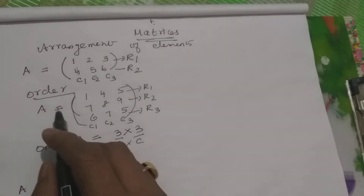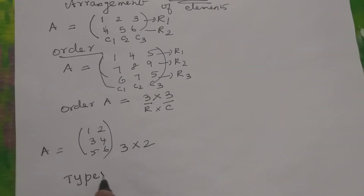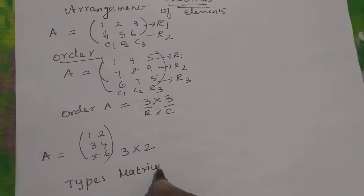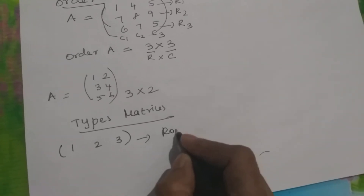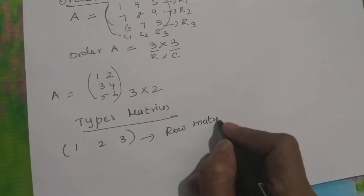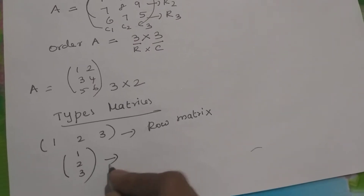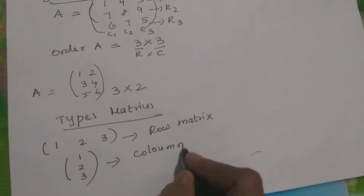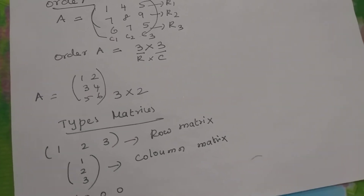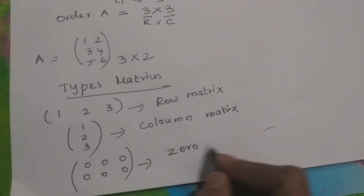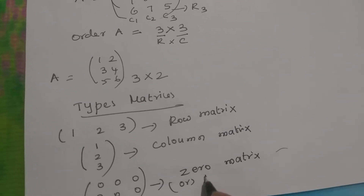Now we are going to find out the types of matrices. If only one row is there, then we can call it a row matrix. If there is a single row, we call it a row matrix. Suppose you have only one column — a single column — it is called a column matrix. Suppose you have only zeros in any matrix, then it is called a zero matrix or null matrix.